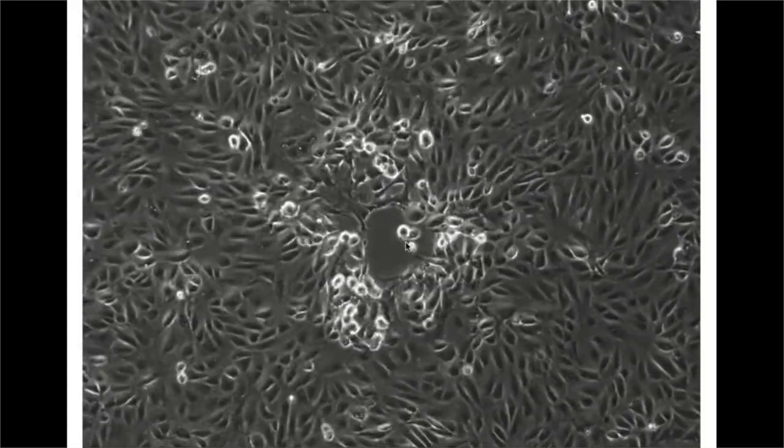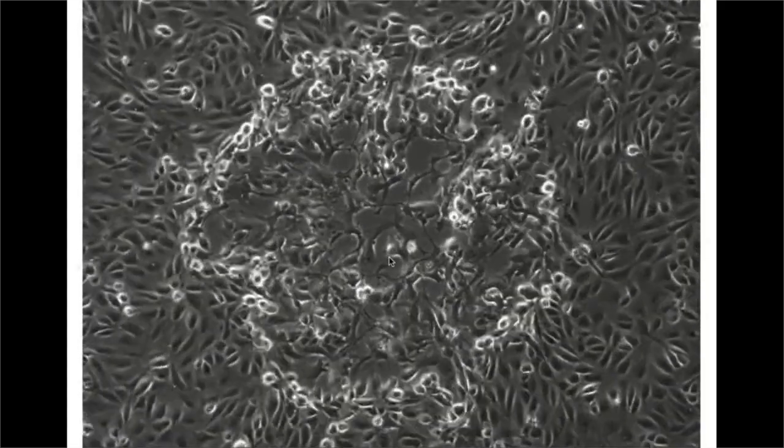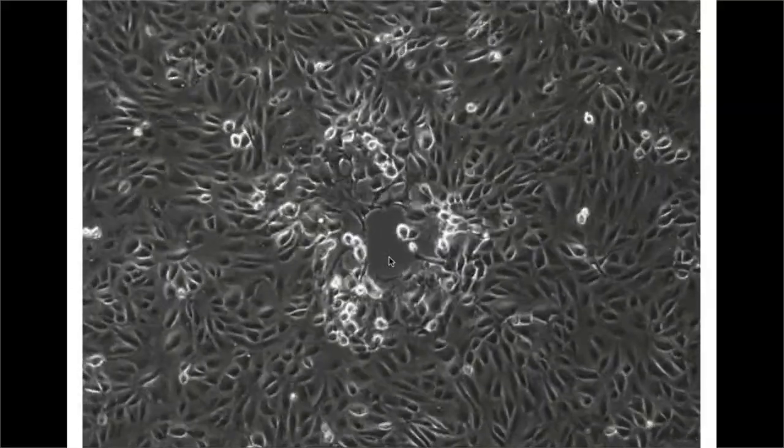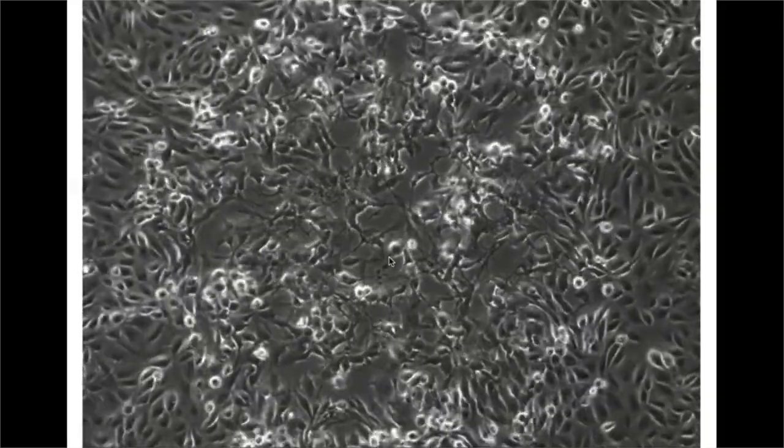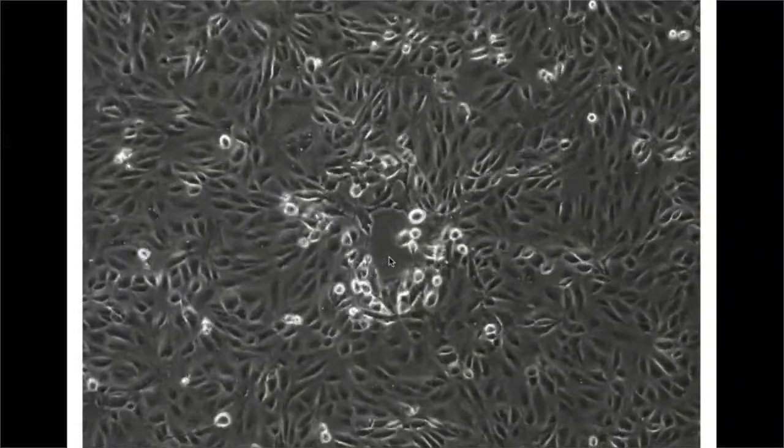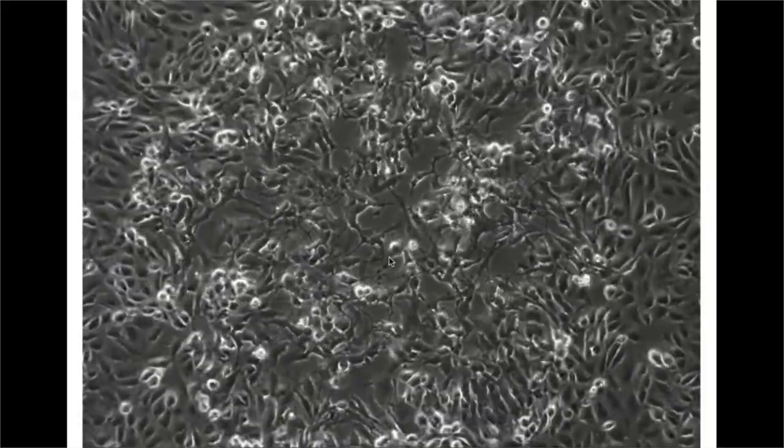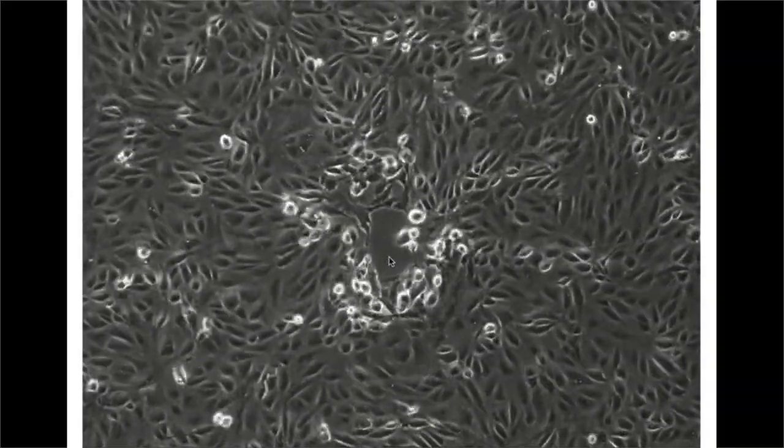What happens then is that the virus particles that are not neutralized infect the cell culture. Each virus particle can only spread to its neighboring cells, due to the agarose. So, one virus particle will cause an area of infected and thus dead cells. This is called a plaque-forming unit, or PFU.